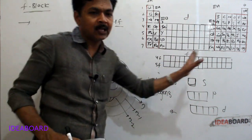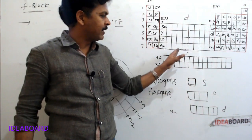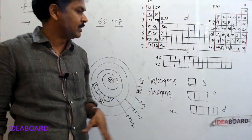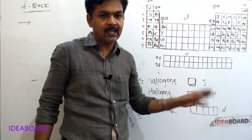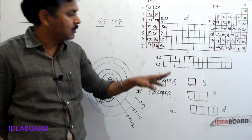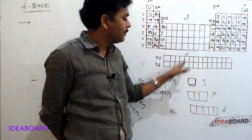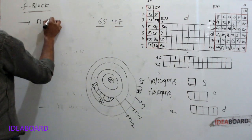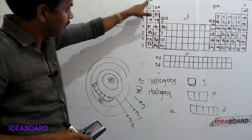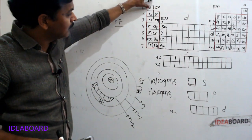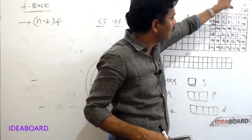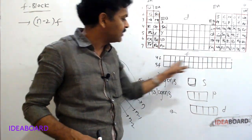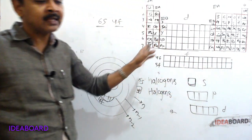F block elements are those in which the differentiating electron enters into the f orbitals of the pre-penultimate or anti-penultimate orbit, that is the n-2f orbitals. Summary: S block → ns orbitals; P block → np orbitals; D block → (n-1)d orbitals; F block → (n-2)f orbitals.